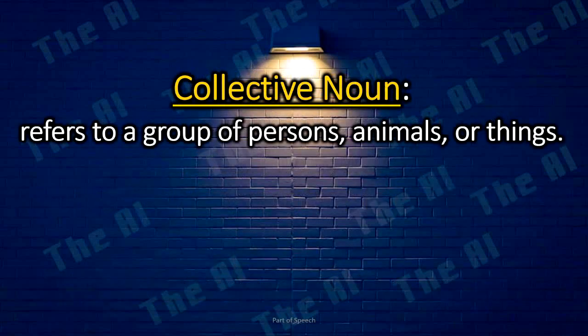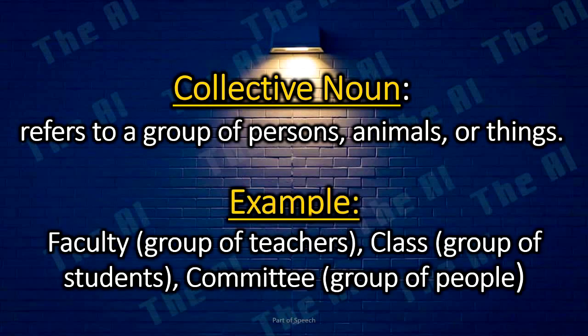Collective nouns refer to a group of persons, animals, or things. Examples: faculty — group of teachers; class — group of students; committee — group of people.